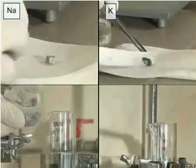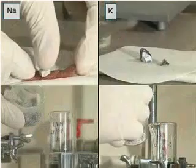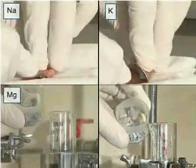Next, we will add small samples of the following metals to the cylinders, one metal to each cylinder: sodium, potassium, magnesium and calcium.